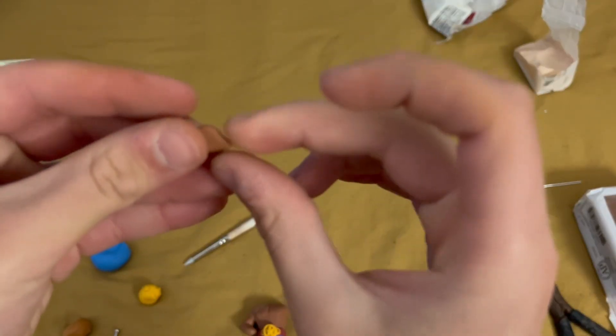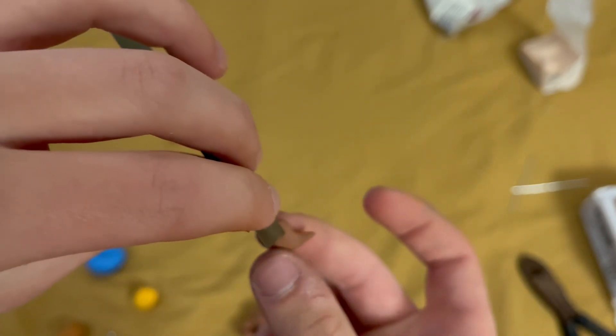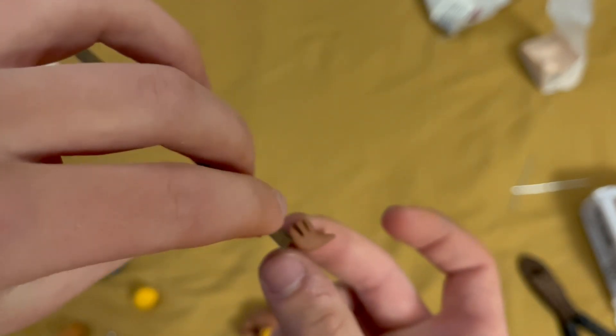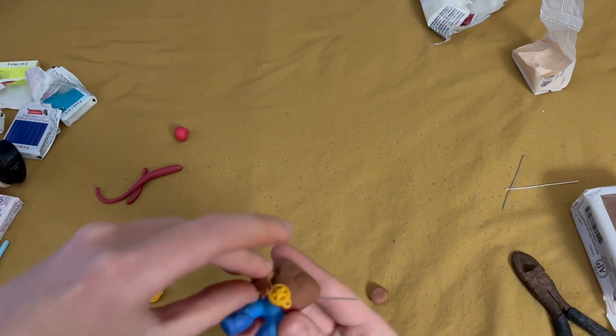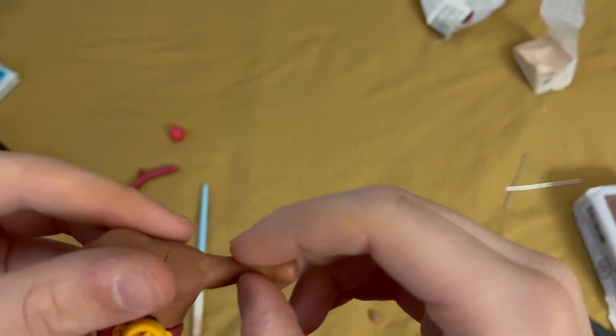Once these are both blended in, it's time to start working on the hand, just one hand in this case. I just pinch out the thumb and then cut out all the different fingers. Except what I actually did was I cut in the fingers when it was already on the body after everything.